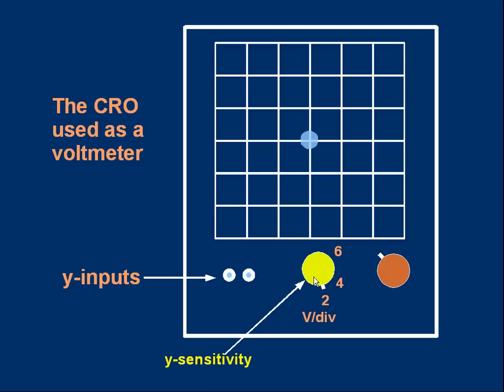This knob I've marked in yellow is called the Y sensitivity. And I've marked three values here, two, four, and six, in units of volts per division. Now, division means the space on the side of one of these squares. So if I've set the Y sensitivity to two volts per division, you can see the pointer is pointing at two. It means that each vertical division corresponds to a two-volt change. Think about that.